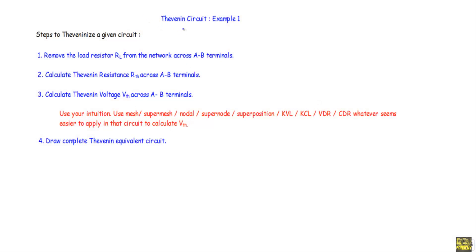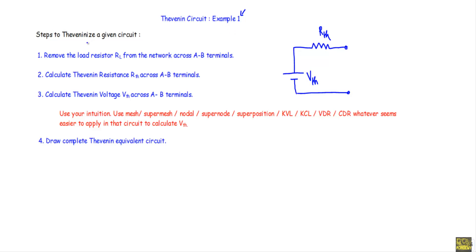In this series I will show you several examples of Thevenin equivalent circuits. A Thevenin equivalent circuit means we can reduce any linear bilateral network to a single voltage source Vth in series with a resistance Rth. That circuit is known as the Thevenin equivalent circuit. These are the steps we will follow to convert any circuit into a Thevenin equivalent circuit.